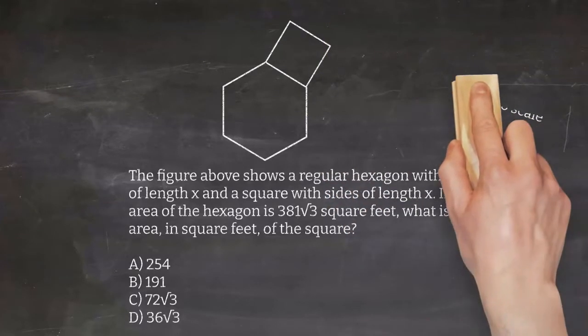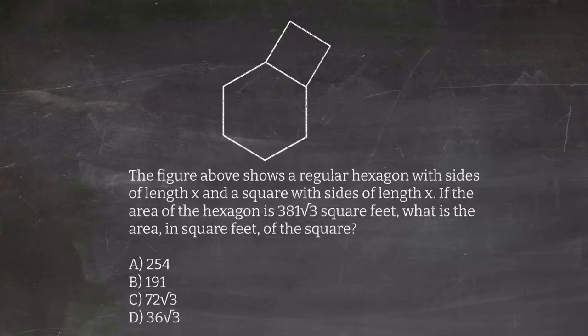Let's read the question knowing that we're going to try to cheat. The figure above shows a regular hexagon with sides of length x and a square with sides of length x. If the area of the hexagon is 381 times the square root of three square feet, what is the area in square feet of the square?